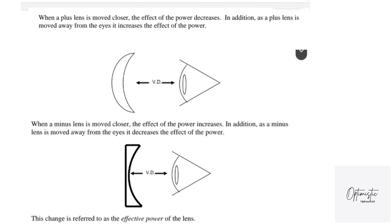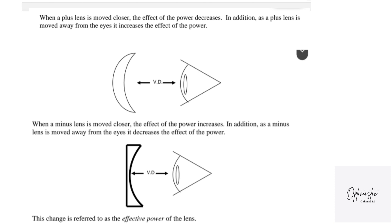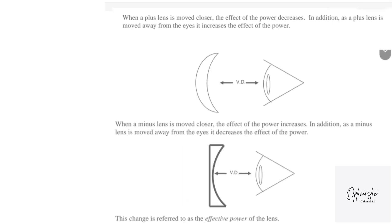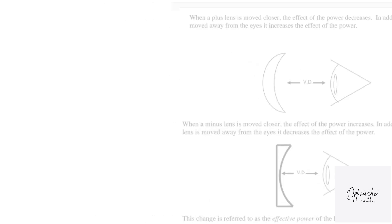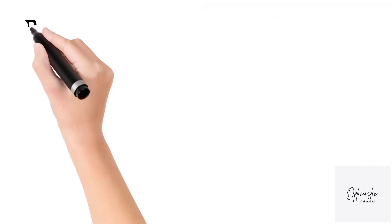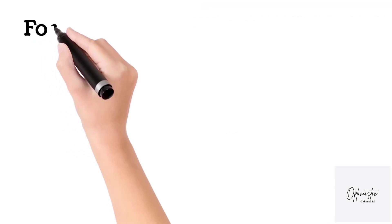When a plus lens is moved closer to the eye, the effect of the power decreases — that's why we require more plus power in the contact lens than the spectacles. In a minus lens, when the lens moves closer to the eye, the effect of the power increases — that's why we require less minus for the contact lens than the spectacle.